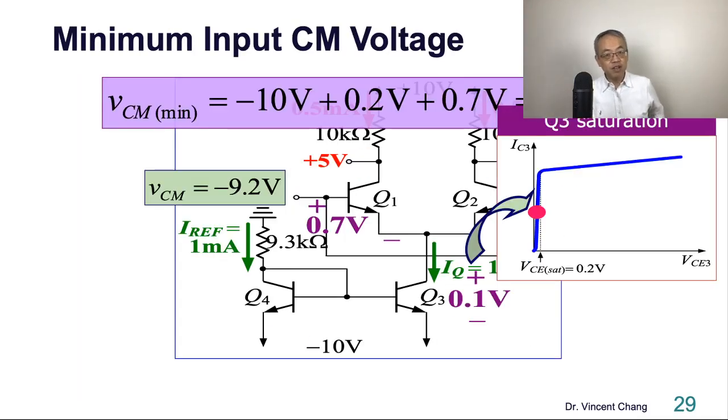So the concept: for the driver to be qualified as an amplifier and the current mirror to be qualified as a current mirror, there's a range, called Input Common Mode Range.